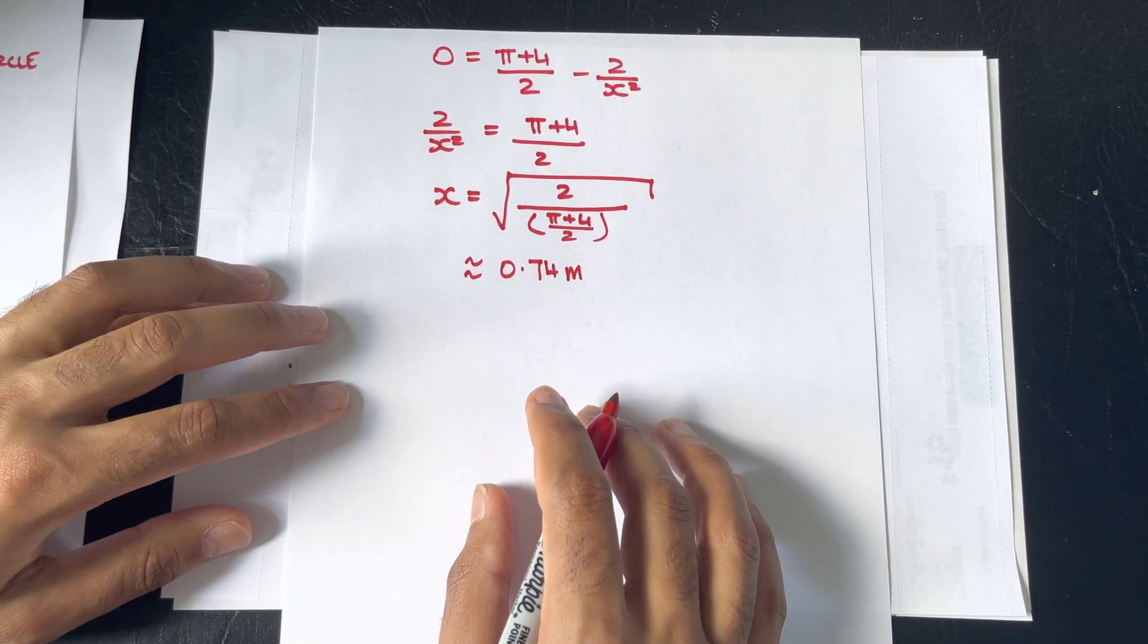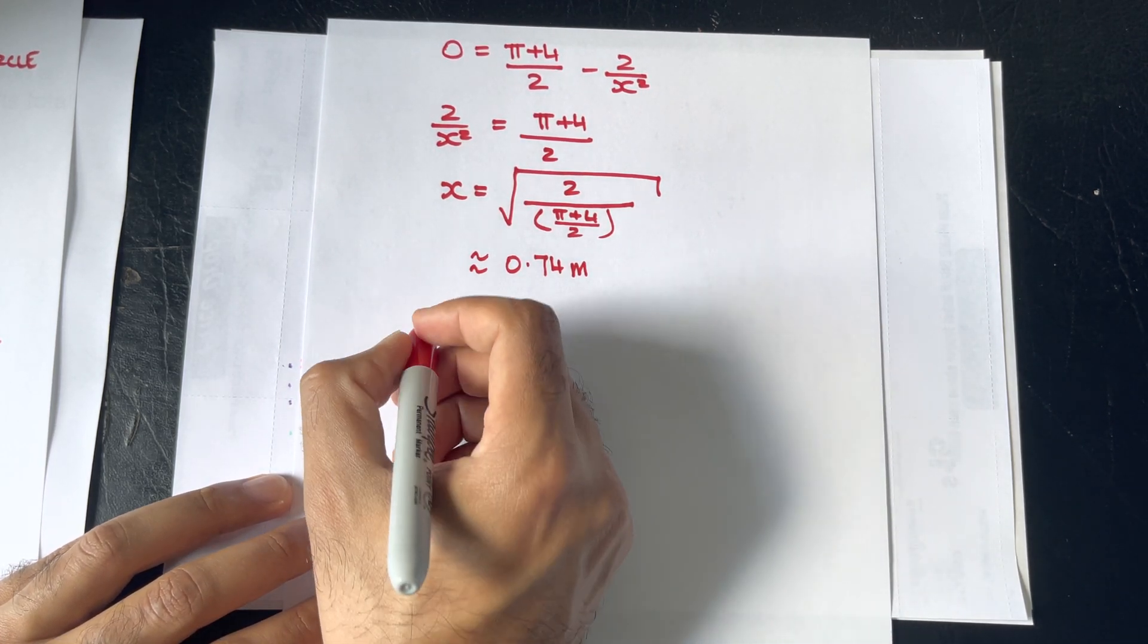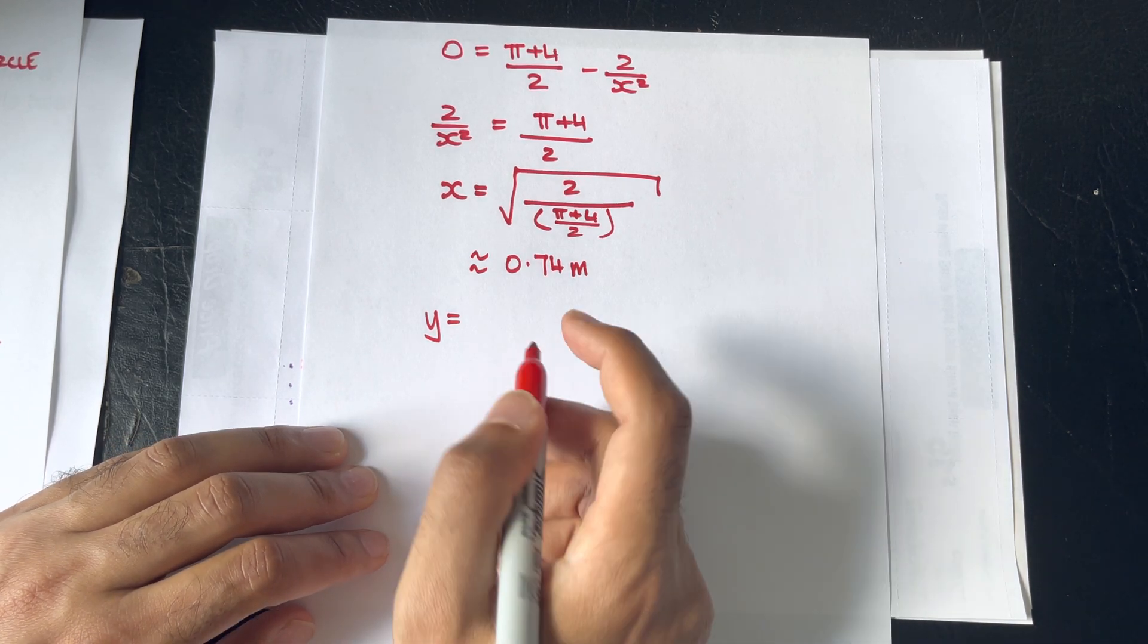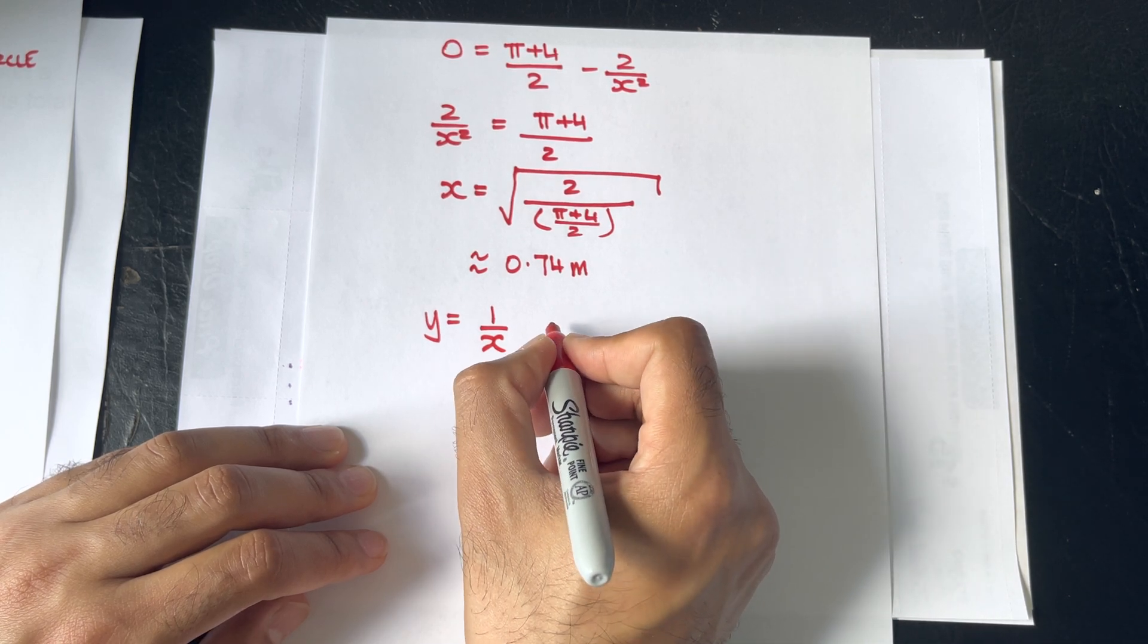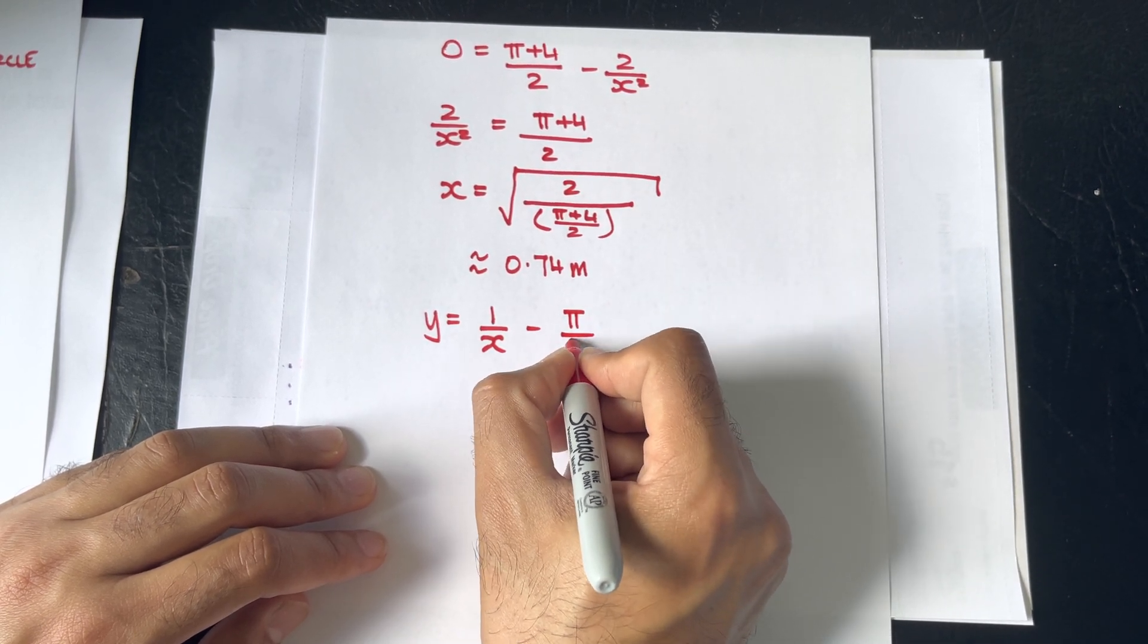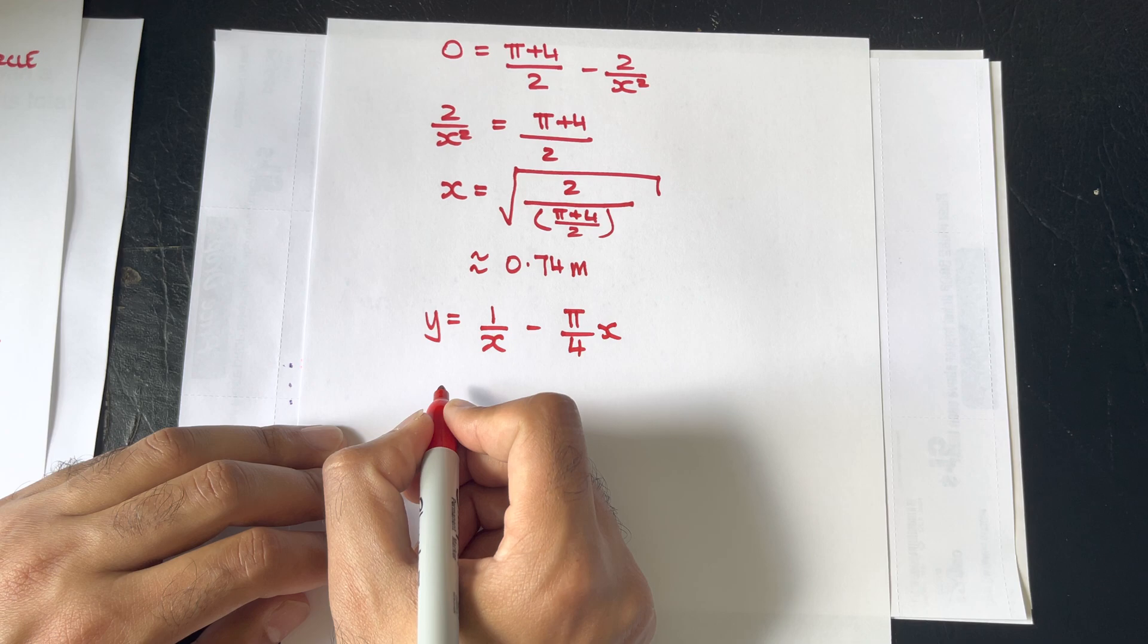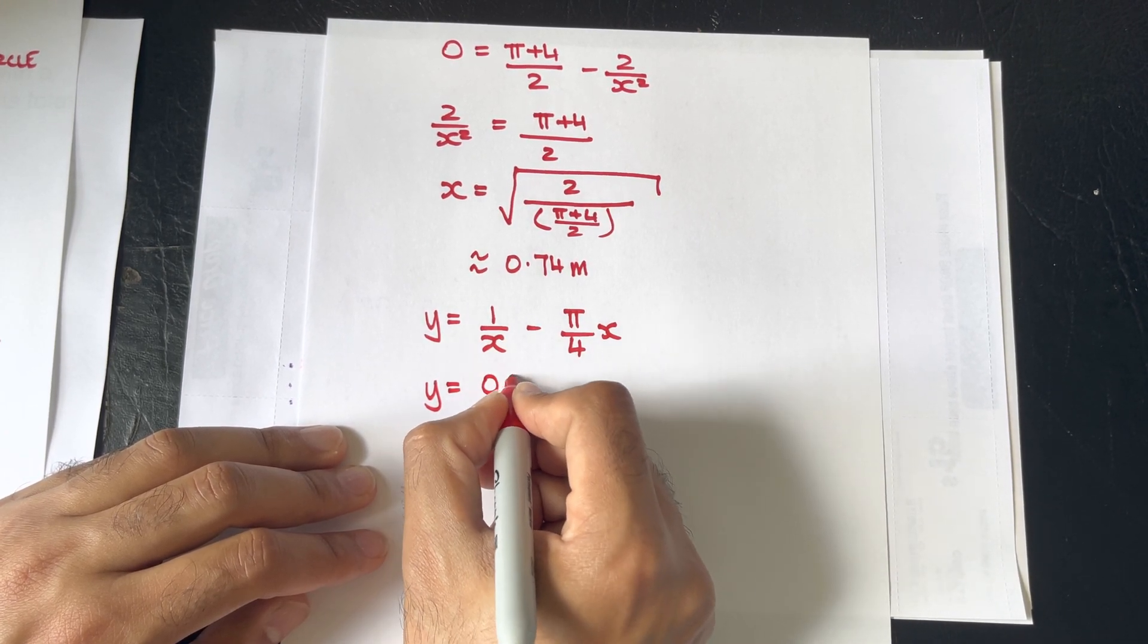Now, the other variable we want to solve for is its length, or in this case, y. And that y is 1 over x from our constraint, minus π over 4x. We substitute x for 0.74, and we will get y being equal to also 0.74.